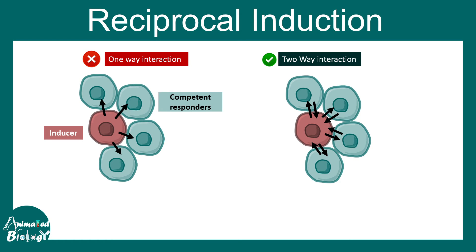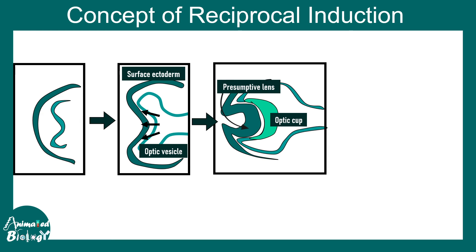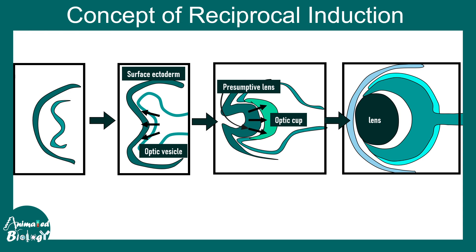A great example of reciprocal induction comes from retina development. The optic vesicle eventually becomes the optic cup, and it first induces the presumptive lens ectoderm. But as the lens begins to form, it also secretes factors that trigger the optic cup to acquire different fates — eventually becoming the neural retina and the pigmented retina. This demonstrates two-way signaling crosstalk between the optic vesicle and the surface ectoderm, known as reciprocal induction.